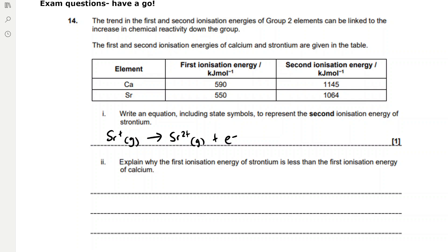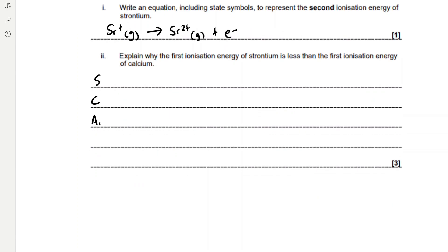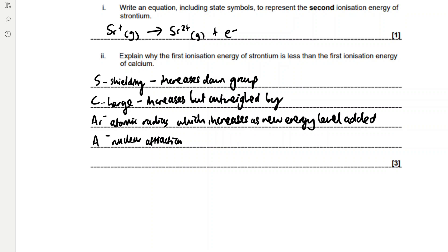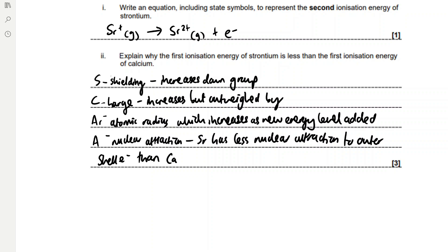We are also asked to explain why the first ionisation energy of strontium is less than that of calcium. Looking at the periodic table, strontium is lower than calcium, and ionisation energies decrease down groups. Using SCARA: going down the group, an extra energy level is added so electron shielding increases; nuclear charge increases but is outweighed by the increase in atomic radius, which also increases as a new energy level is added. Therefore the nuclear attraction in strontium to the outer shell electrons is less than in calcium, meaning less energy is required to remove one mole of those electrons.